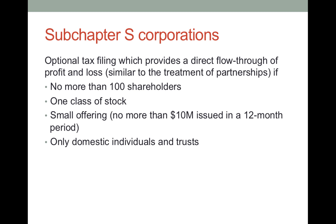We've mentioned subchapter S corporations before. This is simply a filing with the IRS — there's nothing different about the way you form the corporation. You form an S corporation the same way you form any other corporation: you file your articles with the Secretary of State, you create bylaws, you elect directors, you issue stock. The only difference is you file a form with your annual tax statement with the IRS saying this corporation wants to elect to be treated as a subchapter S corporation. It's still a corporation, so you still have the benefits of limited liability.